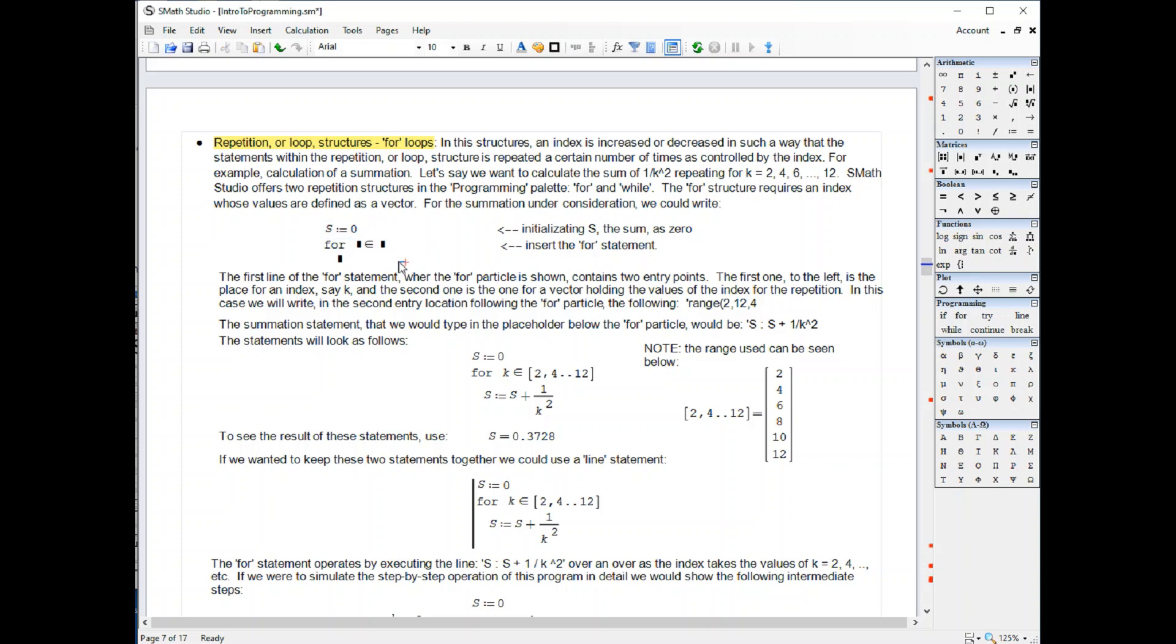And then I'm going to use a for loop to control the summation. The summation that I'm going to try to calculate is basically the summation with k equals 2, 4, 6, 8, 10, 12, 1 over k squared. I could represent that in the following way.